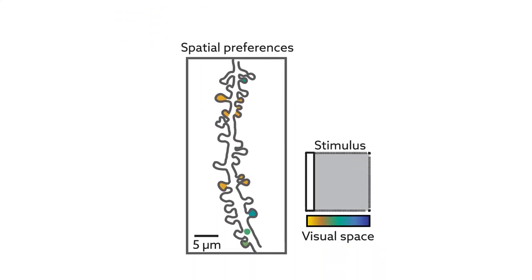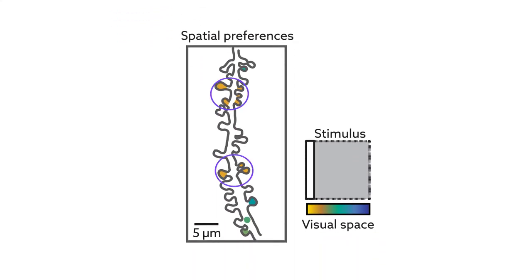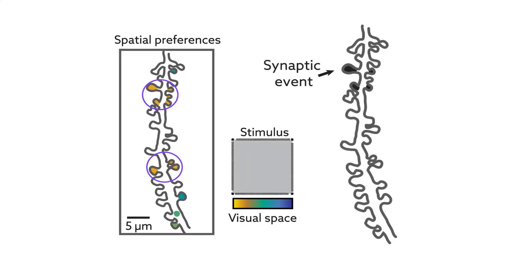The researchers then checked whether neighboring spines carrying similar signals would actually be co-activated by individual visual stimuli. They repeatedly showed ferrets the same stimulus and confirmed that neighboring spines within 5 microns were more likely to be co-activated.